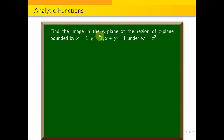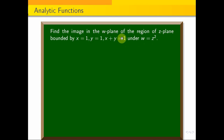This is the question: find the image in the w-plane of the region in the z-plane bounded by x equal to 1, y equal to 1, and x plus y equal to 1, under the mapping w equal to z square. We need to find the image of the region bounded by these three lines.